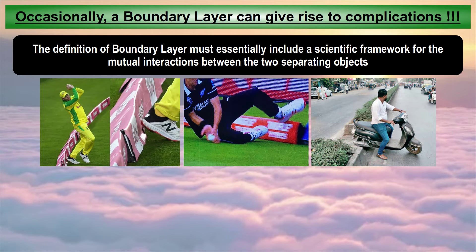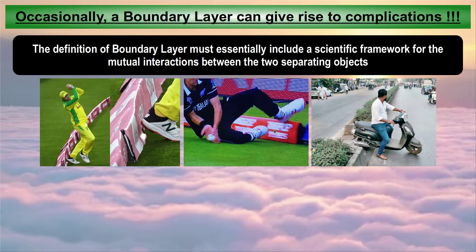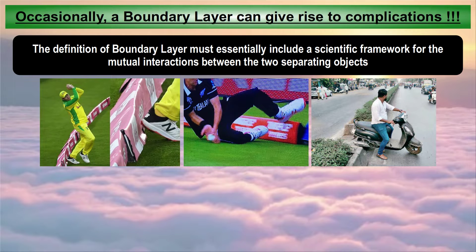A boundary layer can give rise to complications, as I am going to show again in three pictures. The definition of boundary layer must essentially include a scientific framework for the mutual interactions between the two separating objects. In the previous slide we understood there are two different objects separated by a boundary. But here, both these objects are interacting with each other through this boundary layer. For example, the player has almost touched the boundary, so the umpire has to decide whether it should be given six or not. And in the third picture, when the left lane is for going and the right side for coming, if there is some interplay, it gives rise to interactive processes which need to be addressed very properly.